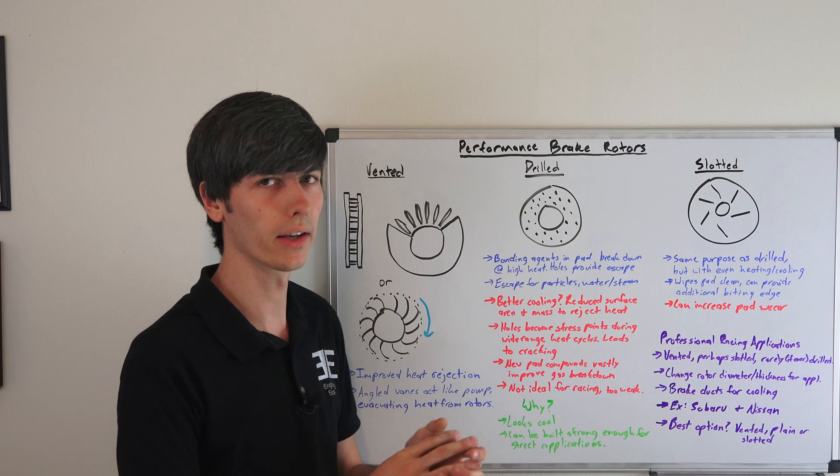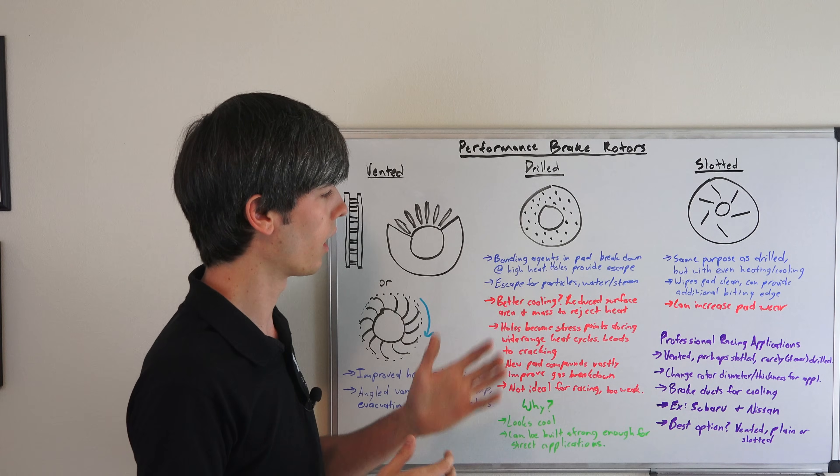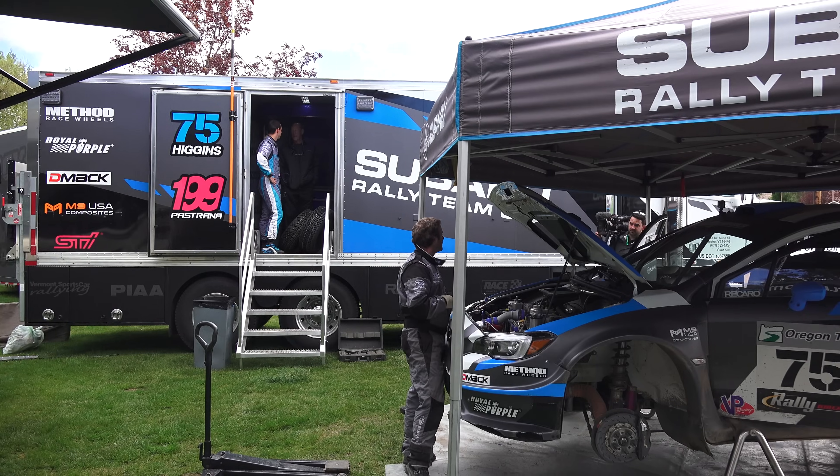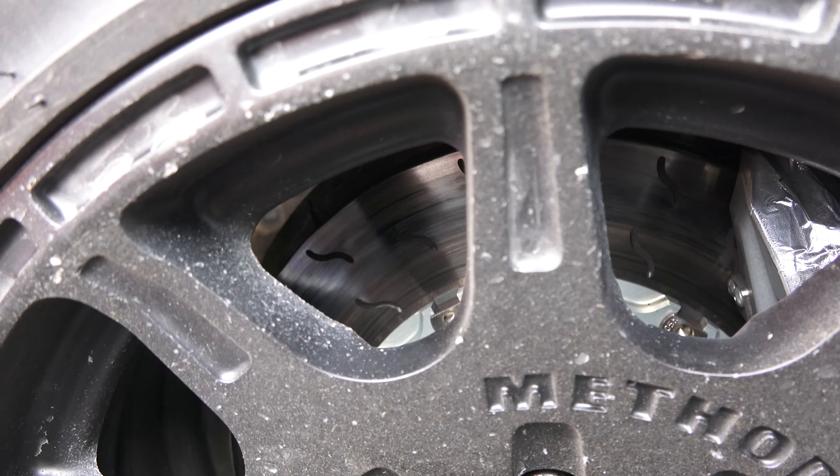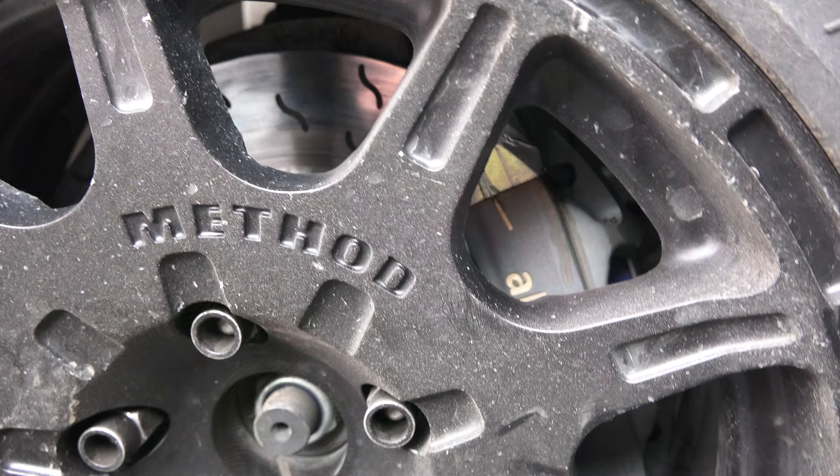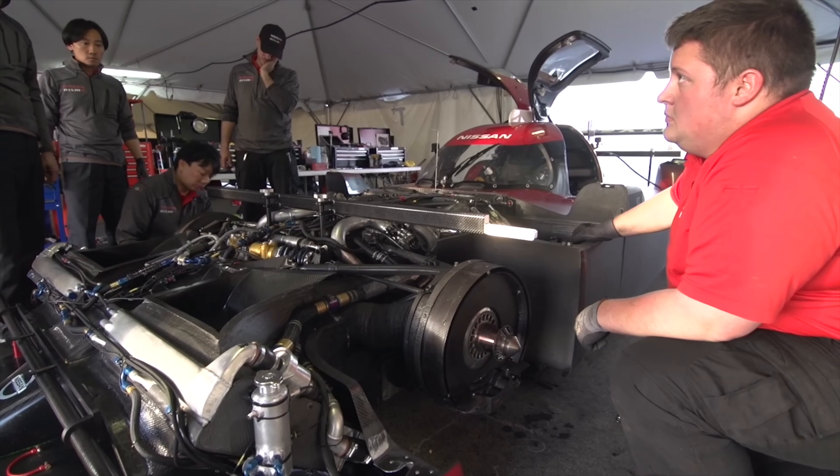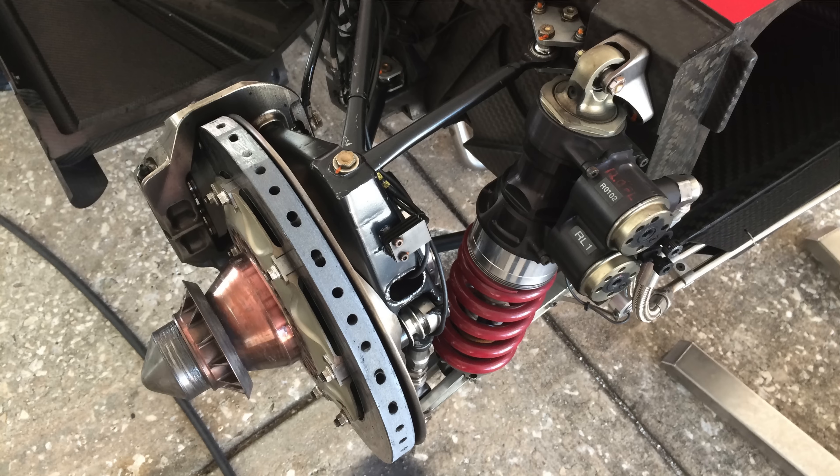And then also brake ducts for cooling. If you can get airflow to the brakes, that's a significantly better way to cool them than some of the other methods out there. Just as some examples, the Subaru rally car that I checked out used slotted rotors, and then the Nissan LMP1 car that I checked out just used plain vented rotors.